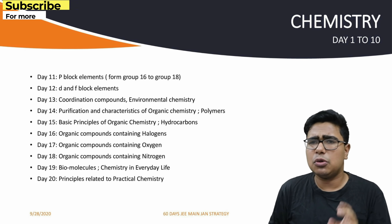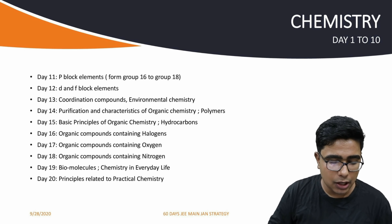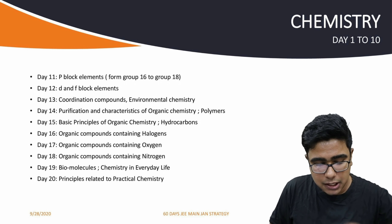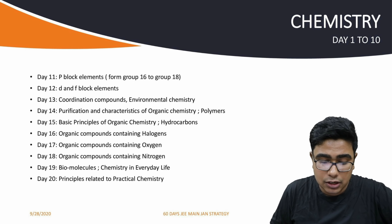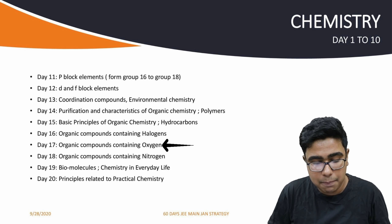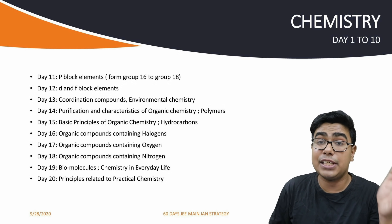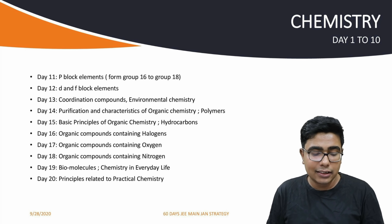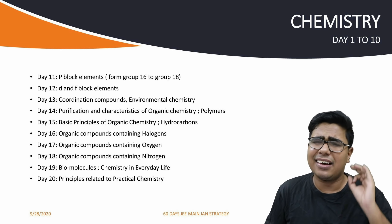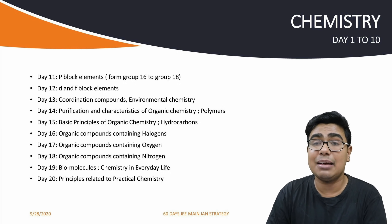Day 12: D and F Block — relatively smaller topics, finish in one day. Day 13: Coordination Compounds and Environmental Chemistry together. Day 14: General Organic Chemistry characteristics with Polymers. Day 15: Basic Principles of Organic Chemistry and Hydrocarbons, along with some NCERT revision. Day 16 and 17: Organic Compounds containing Halogens and Oxygen consecutively. Day 18: Organic Compounds containing Nitrogen. Day 19: Biomolecules and Chemistry in Everyday Life. Day 20: Principles Related to Practical Chemistry.